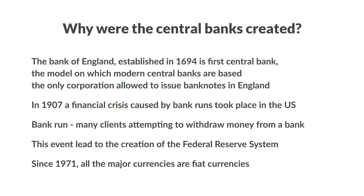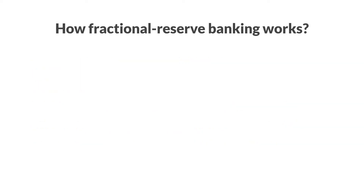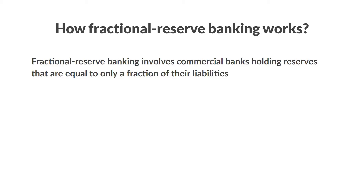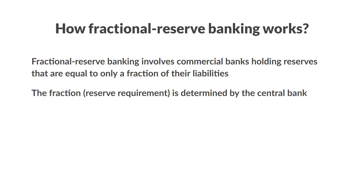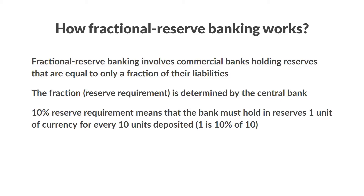In order to better understand how central banks plan to achieve their declared goals, we must first understand fractional reserve banking, which is to date the most common form of banking practiced worldwide. This involves commercial banks holding reserves that are equal to only a fraction of their liabilities, and this fraction is determined by the central bank and is referred to as the reserve requirements. If the central bank says that the reserve requirement is 10%, this means that banks must hold in reserves only 1 unit of currency for every 10 units deposited, because 1 is 10% of 10.